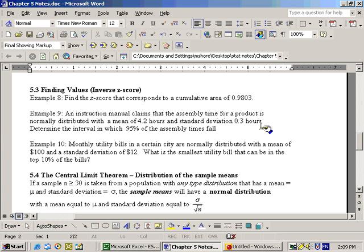So the Sigma is 0.3, and they both are in hours, so we're in good shape there. It says, determine the interval in which 95% of the assembly times fall. So we want the Z-scores, or the X-scores, in other words, that are to the left and the right, that 95% of your data is between these two.